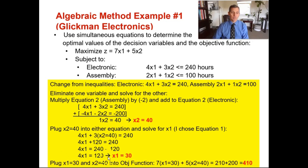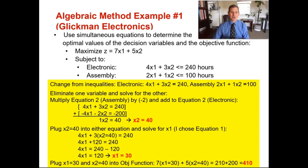We're not done yet — we want to know our maximum profit from the objective function. Plugging in x1 and x2: 7 multiplied by 30 plus 5 multiplied by 40 gives you 210 plus 200 equals 410. Your maximum profit is 410. Your x1 — which was xpods — is 30, and your x2 — which was blueberries — is 40. So we just solved Glickman Electronics very quickly using the algebraic method.